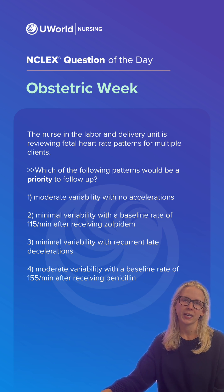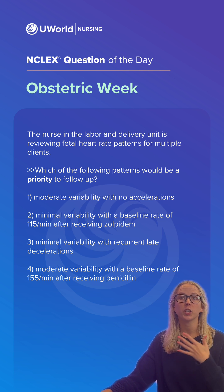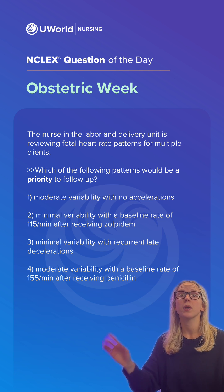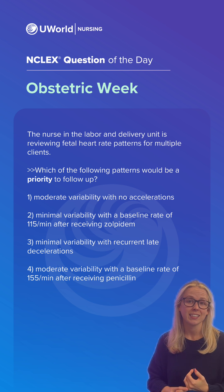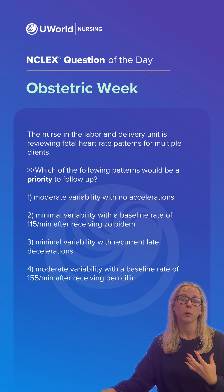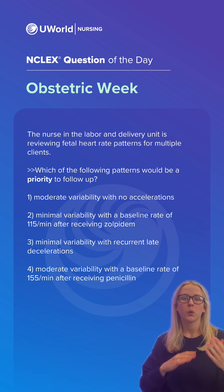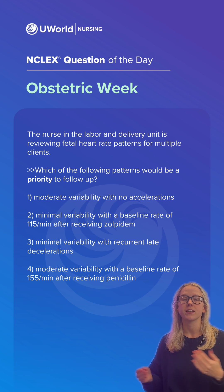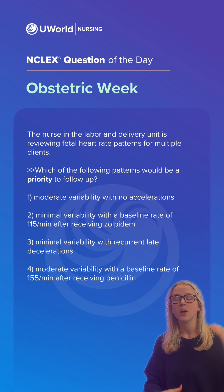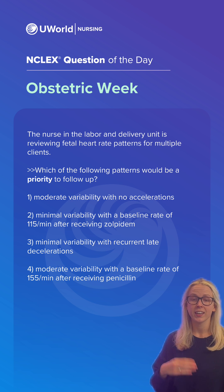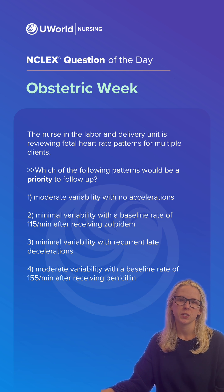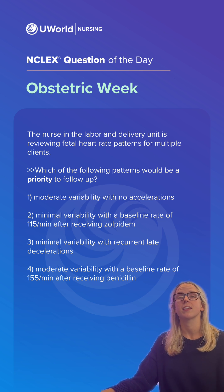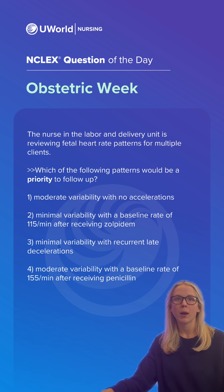Our correct answer is option 3 — this is our priority to follow up. Minimal variability is a non-reassuring pattern, and late decelerations are a sign of uteroplacental insufficiency. We categorize fetal heart rate tracings in three categories: Category 1 is reassuring, Category 3 is non-reassuring, and Category 2 is essentially everything in between. So option 3 is our priority.